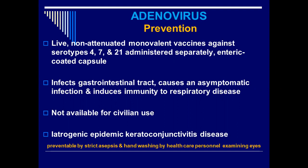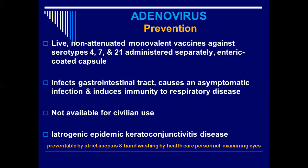The vaccine is not available for civilian use, similar to how China first used its COVID-19 vaccine in the army for military personnel. There is also iatrogenic epidemic keratoconjunctivitis — disease produced by physician manipulation or therapy. This is preventable by strict aseptic technique and hygiene, including hand washing by healthcare professionals. If you take care of hand washing, personal care, and use of sterilized equipment, you can avoid this virus.